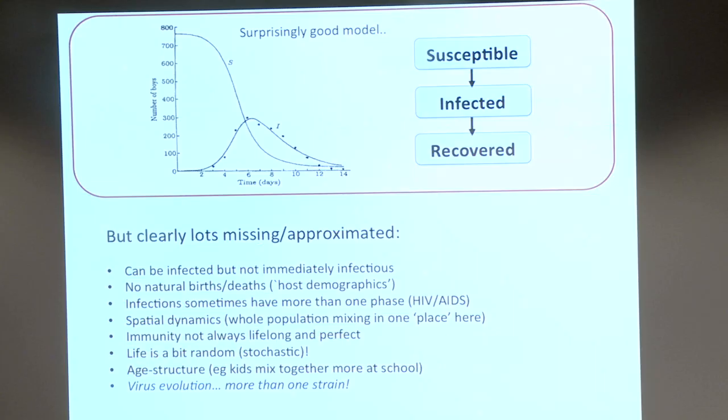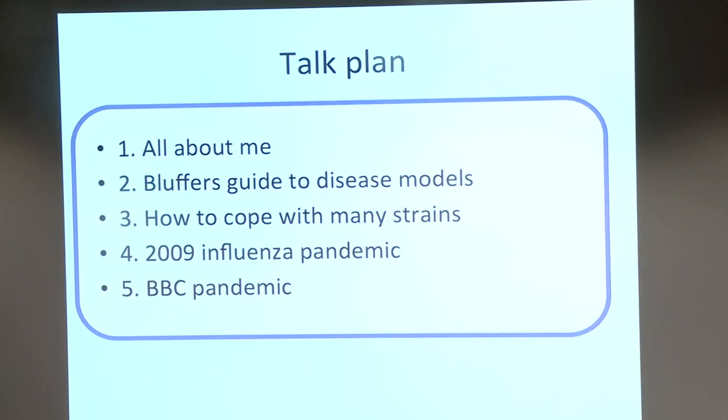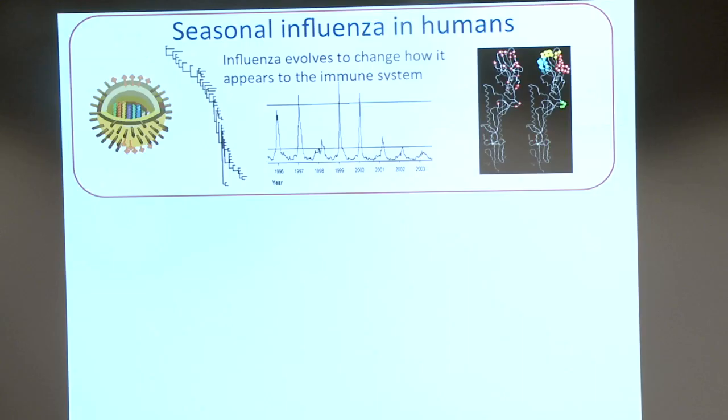So that was the bluffer's guide to SIR. Now you know what to say to a disease modeller — it's pretty good, but the fun thing is asking which bit they're extending. Ready for the next bit? How do we cope with many strains? I'm going to show you why this is a really tricky problem, then show you one way we've dealt with it and a little bit of my own work. I also want to give you a sense of how this fits into actually dealing with infectious disease — is this just a mathematical exercise?